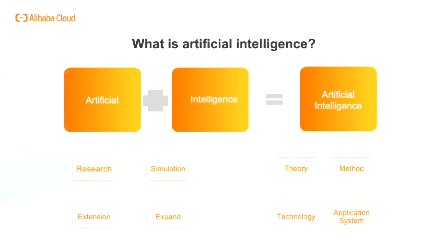What is artificial intelligence? Artificial intelligence consists of two parts: one is artificial and the other is intelligence. Through research, simulation, extension, and expansion of natural intelligent entities represented by humans, we build artificial intelligence entities. In this process, many theories, methods, technologies, and application systems in the field of artificial intelligence were born.